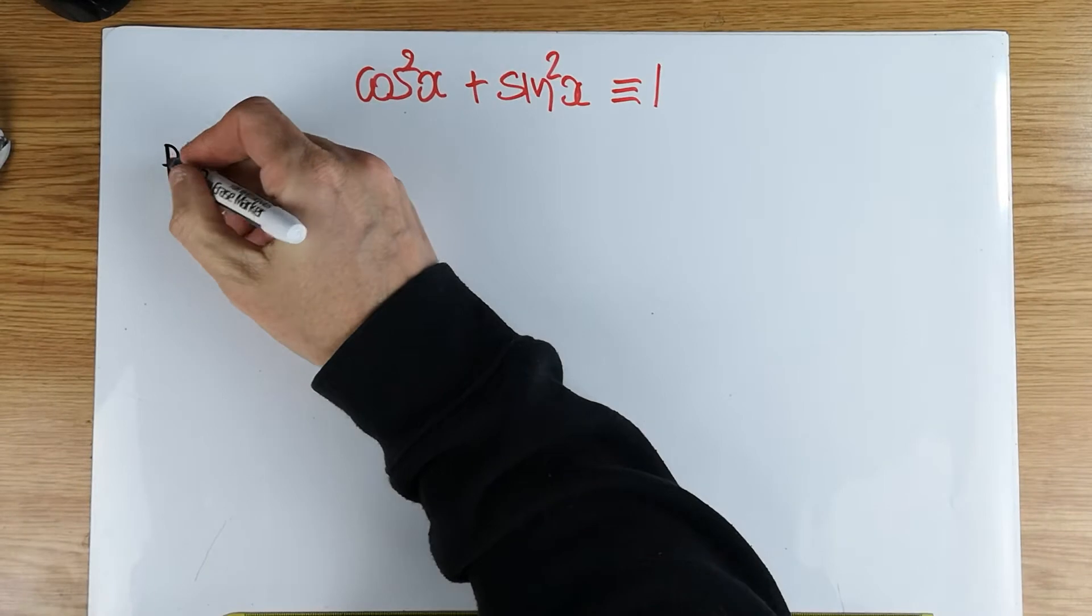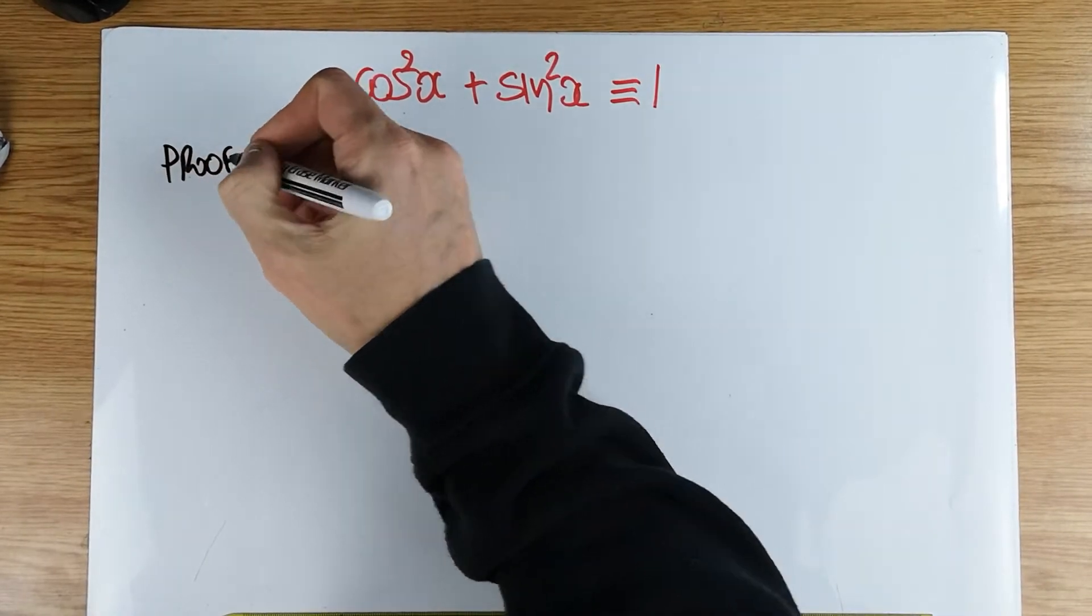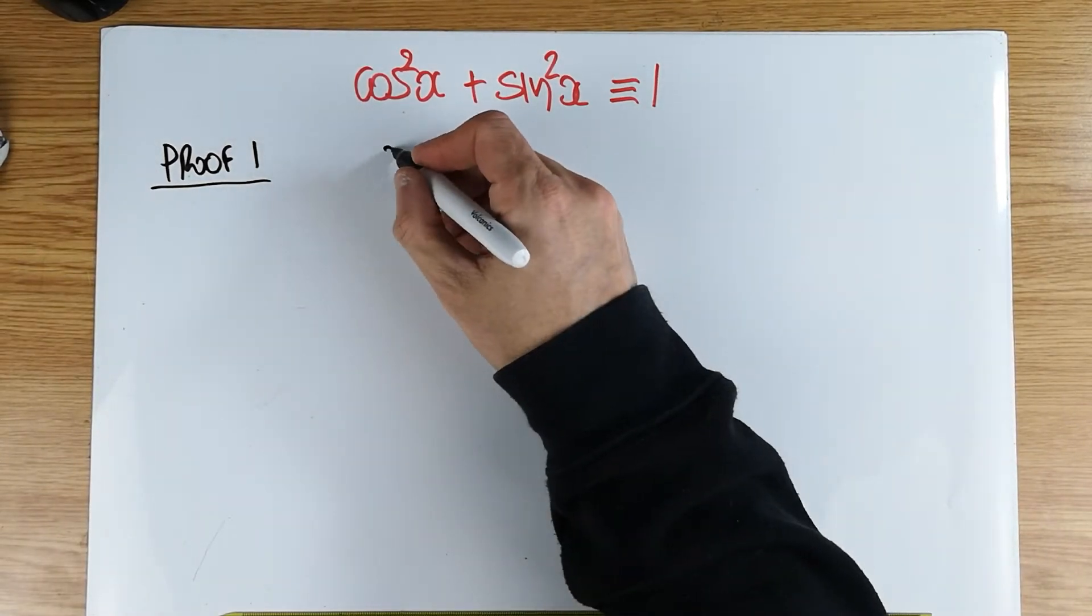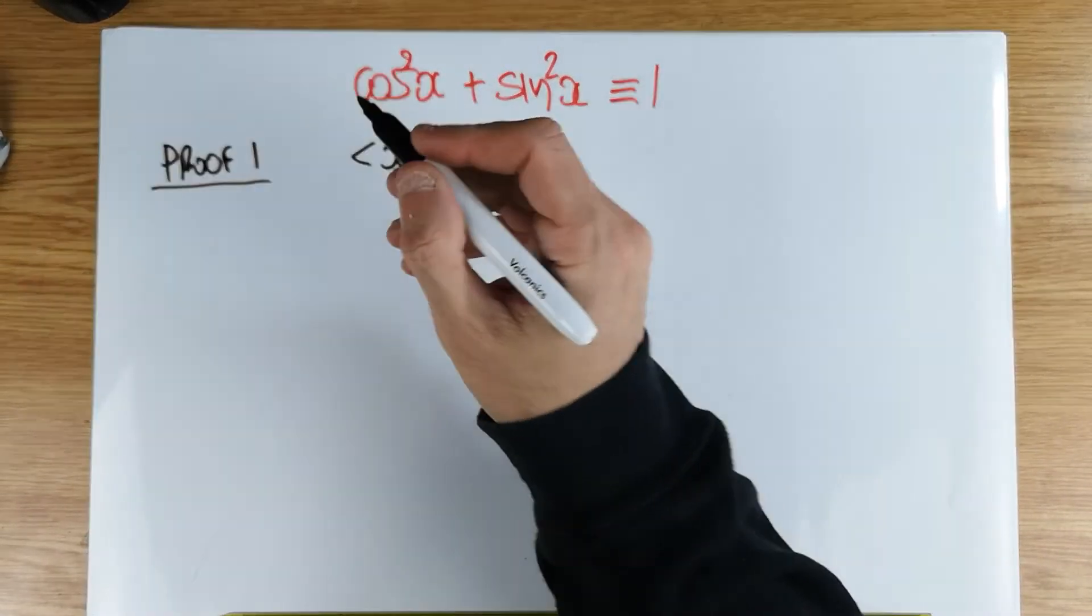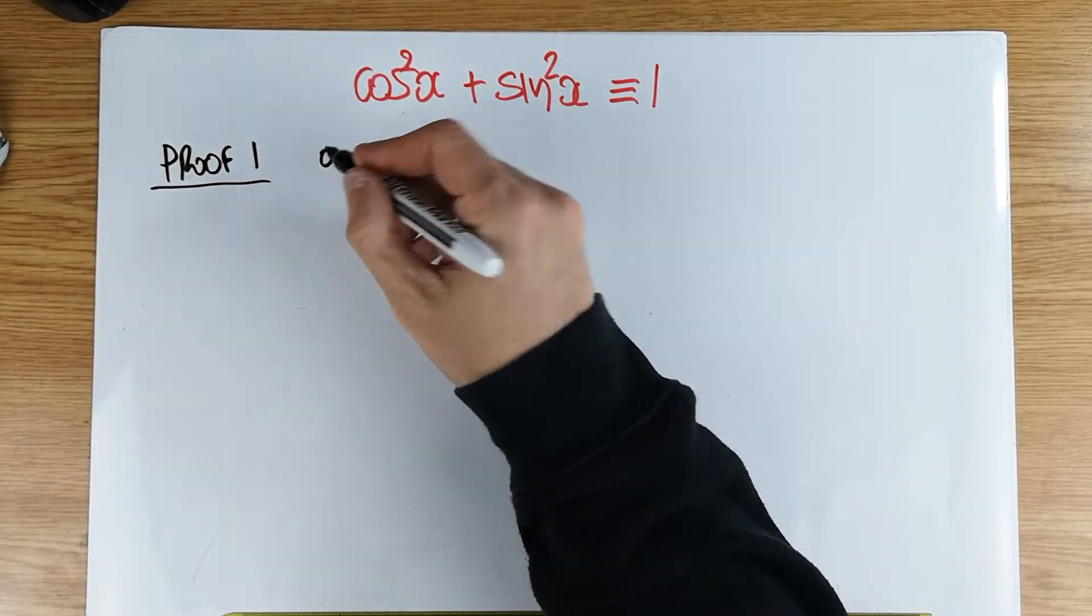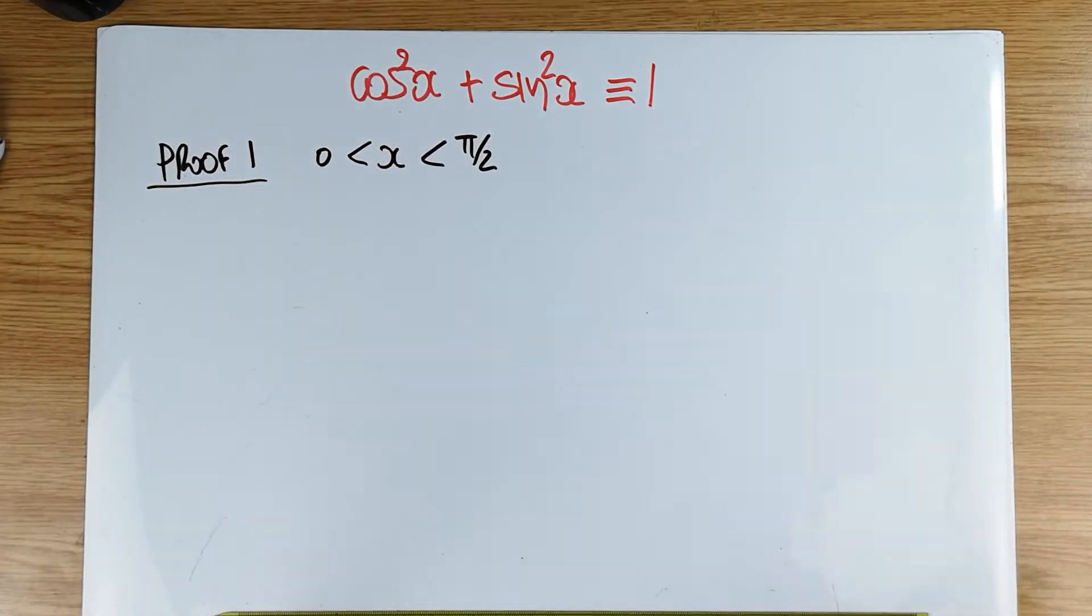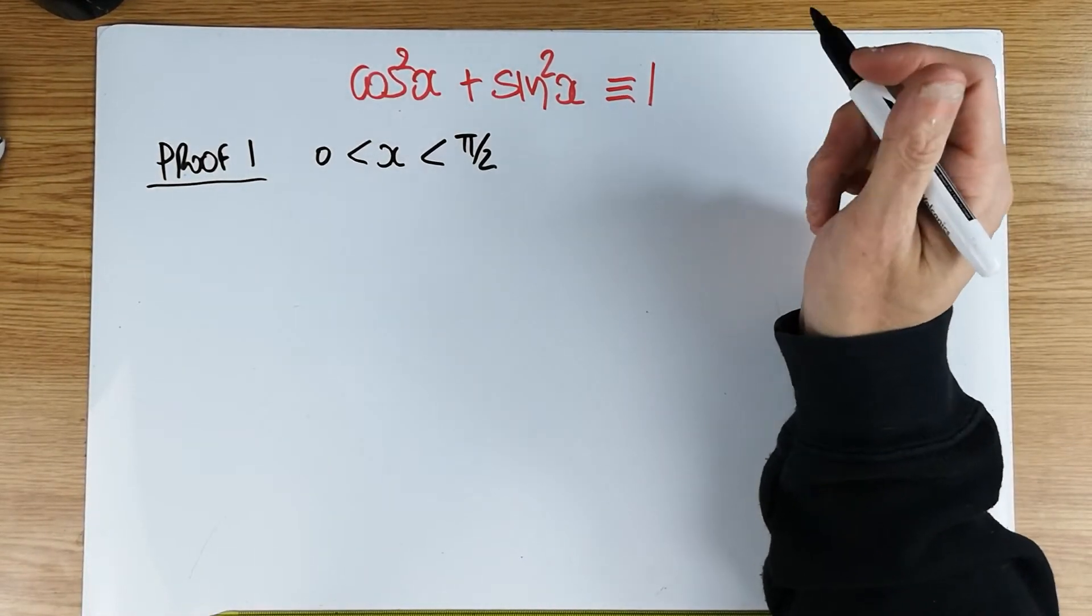The first proof, proof number 1, many of us might have seen this particular proof. It's not actually a proper proof because you have to assume that x is a quantity which is between 0 and pi over 2. So if you're working in degrees, it's really an acute angle.